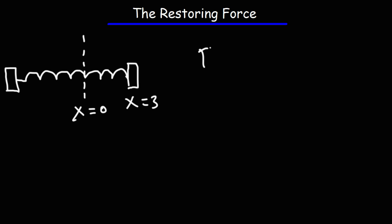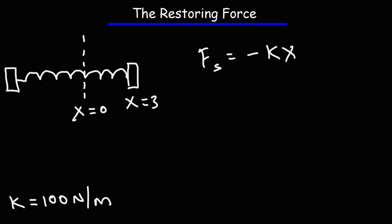The equation that gives us the restoring force of a spring is: F is equal to negative kx. k is the spring constant, and let's give it a value of 100 newtons per meter. The spring constant tells you how stiff the spring is — if it's easy to stretch or compress it, or if it's very difficult to do so. A spring constant of 100 newtons per meter tells you that you require 100 newtons of force to stretch or compress the spring by one meter.